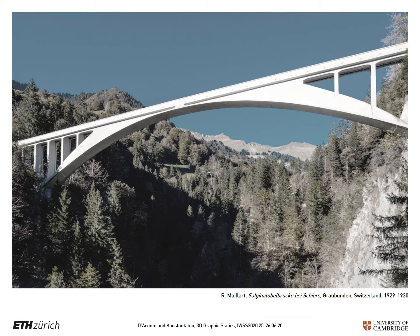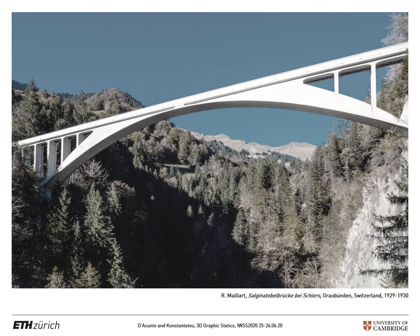One of the most incredible examples of the elegance that can be achieved by designing following the principle of resistance by form is the Salginatobel bridge in Switzerland by Robert Maillart. The form of the bridge directly relates to the distribution of the internal forces within the structure.